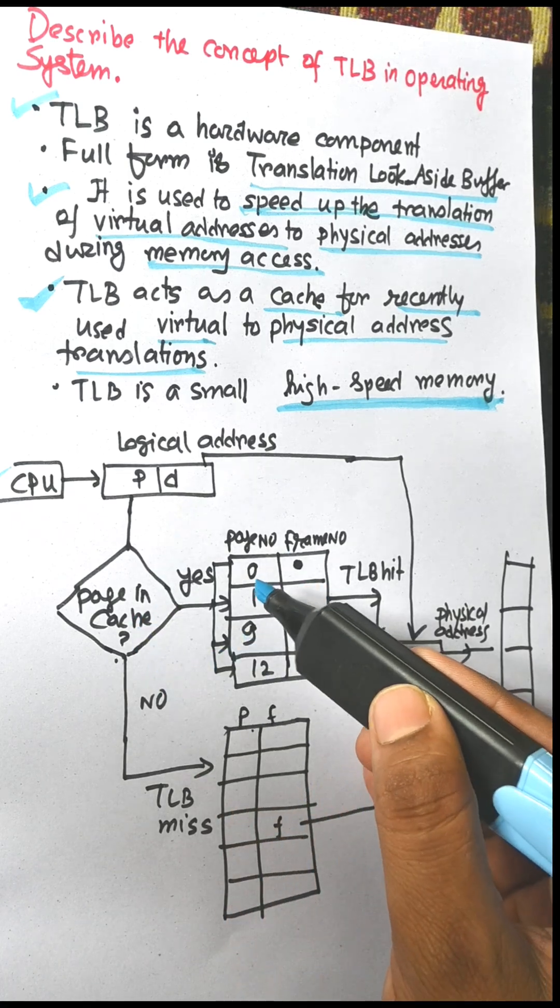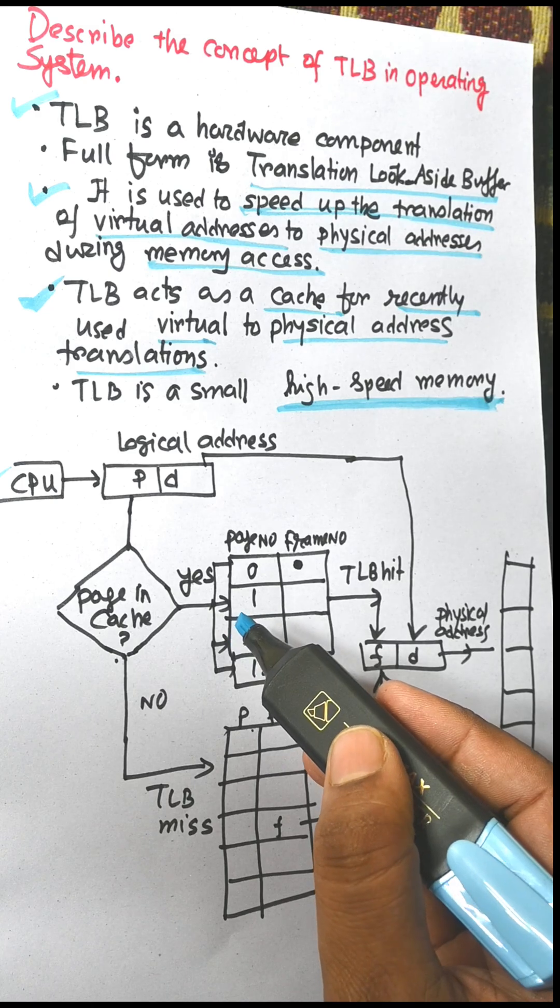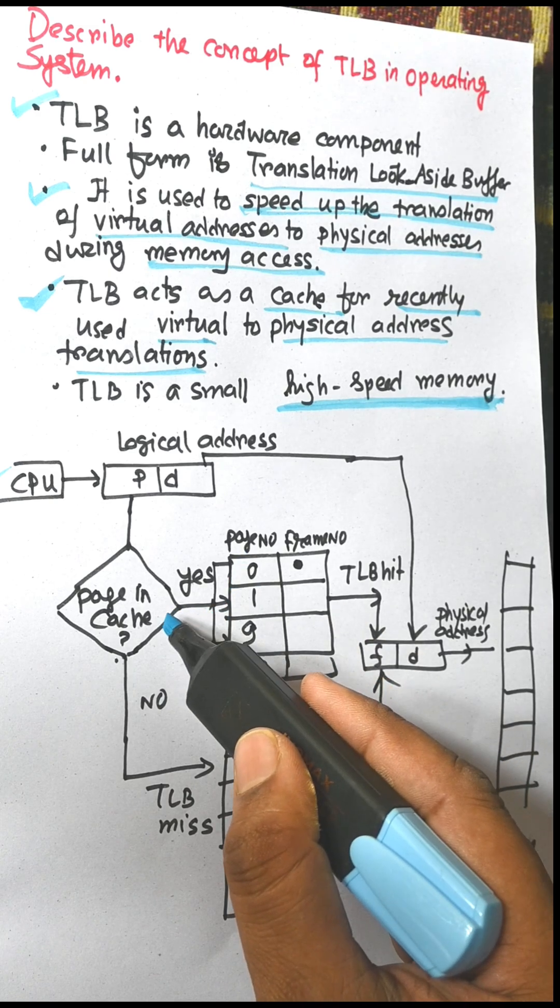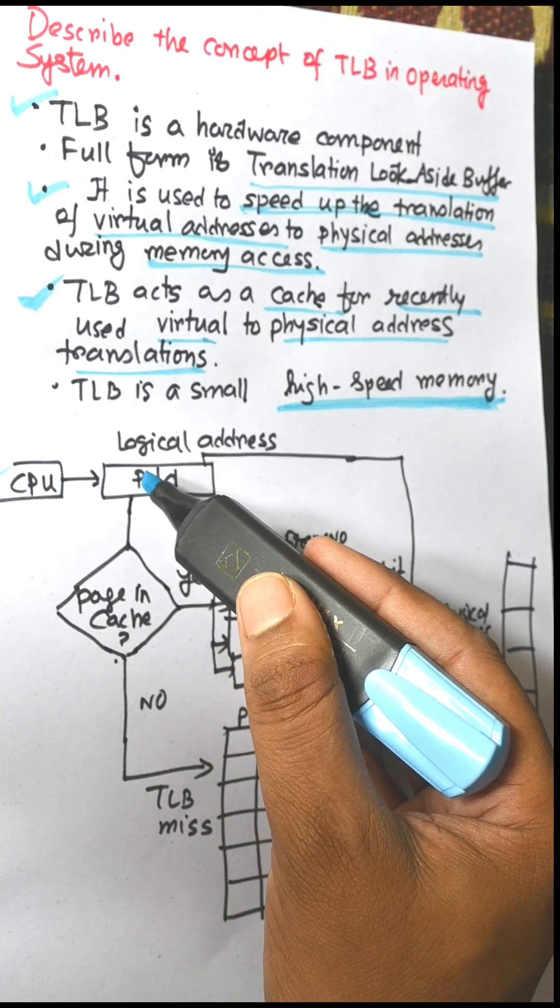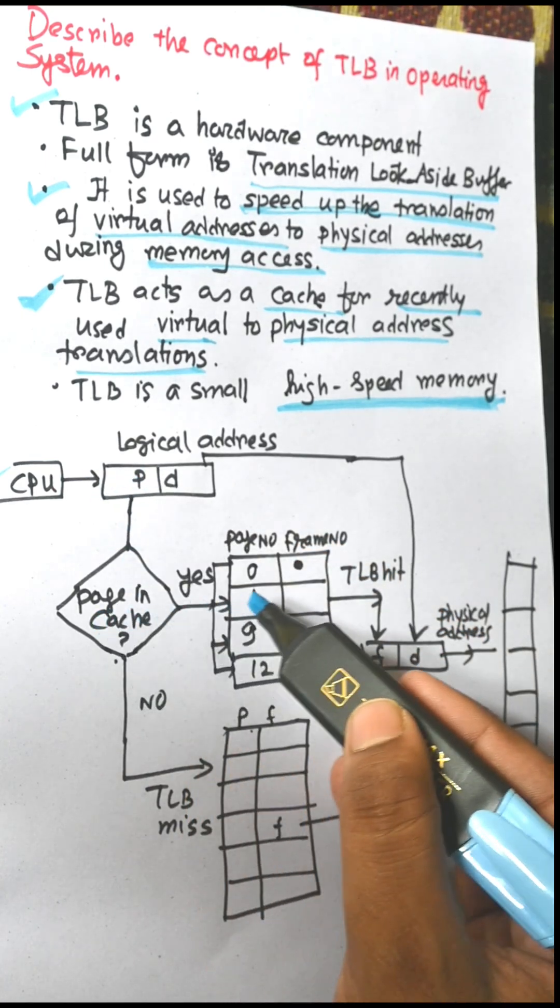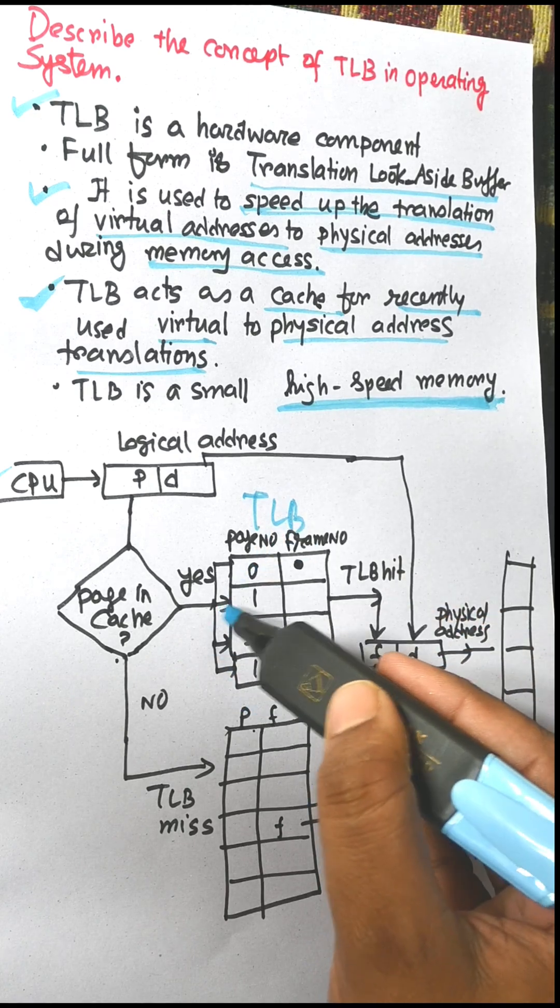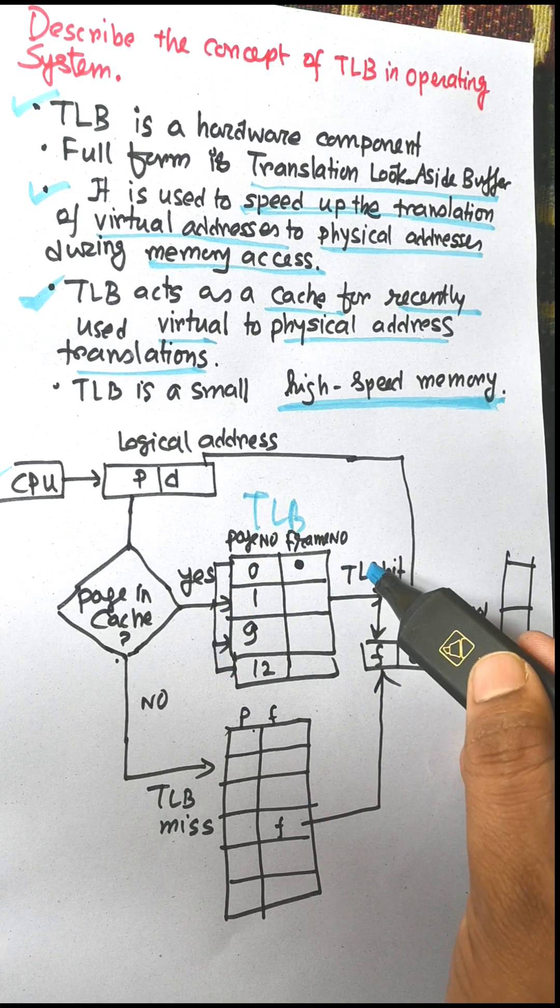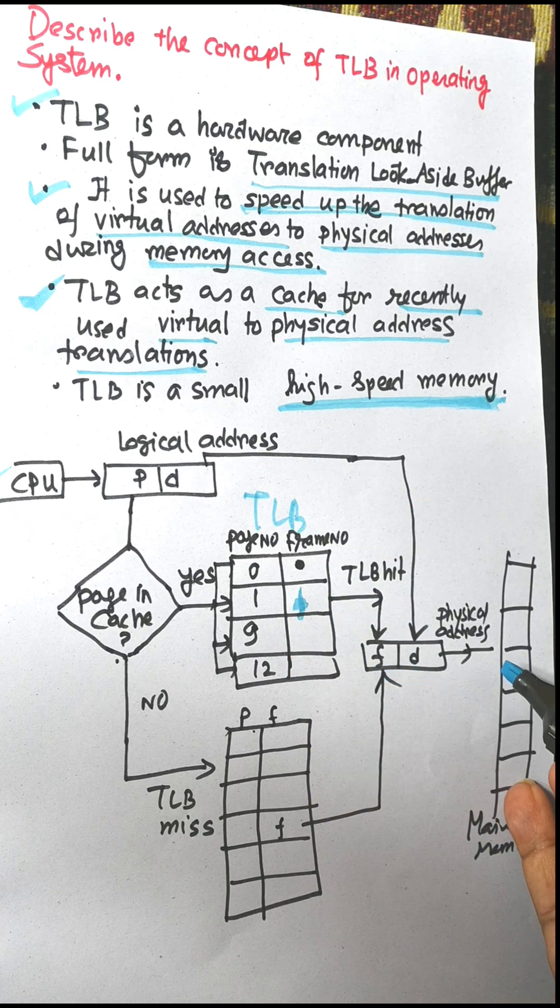In TLB we can search every page instantly. When you search any page, it will search instantly from the page number. So suppose we need a page and it is found in the TLB, it is a hardware, if it is found then it is called TLB hit and we will get the frame number and the offset is copied and we get the physical address.